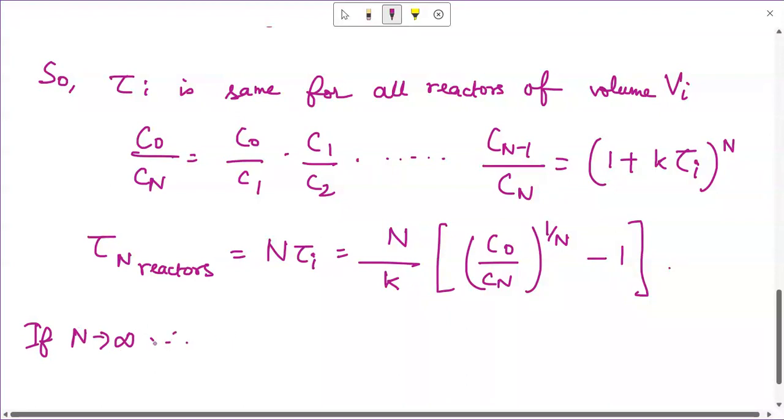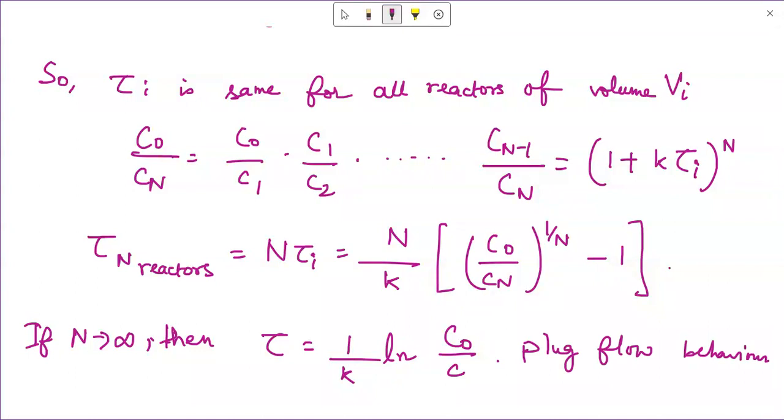If this n is approaching infinity, that is there is a large number of mixed flow reactors in series, then you will get the tau term equals to 1 by K logarithm of C0 by C and this is approaching the plug flow behavior. This is how we go about for using the performance equation for a single mixed flow reactor to obtaining the performance for n mixed flow reactors in series. And this last two expressions they serve as the connecting point between the plug flow reactor and the series of mixed flow reactors.